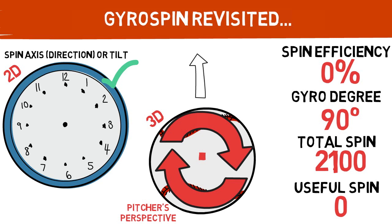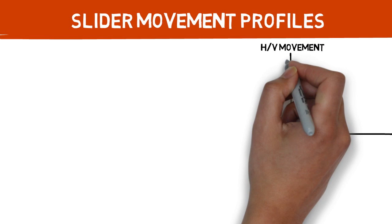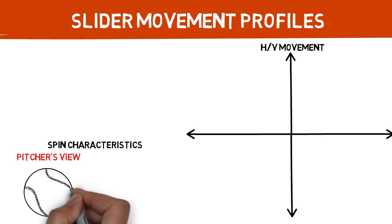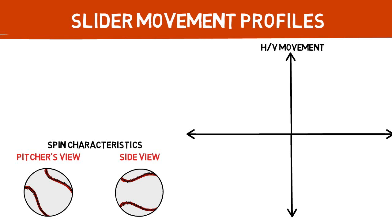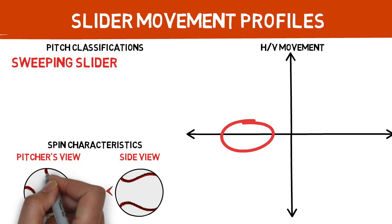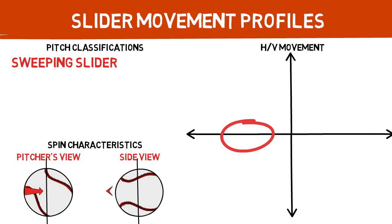Now with that out of the way, we can begin to talk movement profiles. These examples are for right-handed pitchers but can be flopped for lefties. We will plot our horizontal and vertical break chart and look at each pitch's characteristics from the pitcher's view and from the side. To start, we will plot the normal sweeping slider — a pitch with close to zero positive or negative vertical break and a decent amount of negative horizontal break. From both the pitcher's perspective and the side view, you can see this pitch has a more straight-up spin axis, spinning around a point on both the top and bottom of the ball. This tilt would be around 9 o'clock, and it is truly pretty rare to see this type of spin from any overhand throwing athlete. When you think of a sweeping slider, think purely side spin.